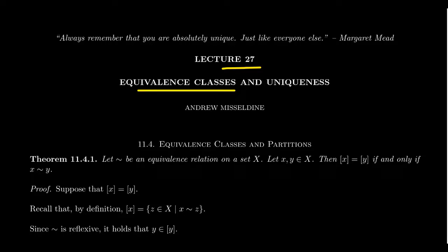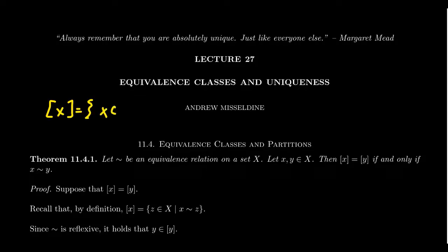Recall that given an equivalence relation — a relation on a set that is reflexive, symmetric, and transitive — this equivalence relation is measuring some notion of sameness, that objects in the set are related to each other; they're similar, they're equivalent to each other. Associated to an equivalence relation is the collection of equivalence classes. The equivalence class for X is the set of all elements Y inside the set such that Y is related to X.